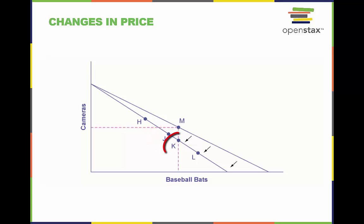Choice K would mean that the higher price of bats led to exactly the same quantity of bats being consumed, but fewer cameras. Choices like L are ruled out as theoretically possible, but highly unlikely in the real world, because they would mean that a higher price for baseball bats means a greater quantity consumed of baseball bats.